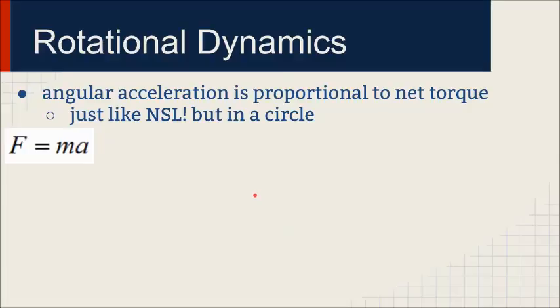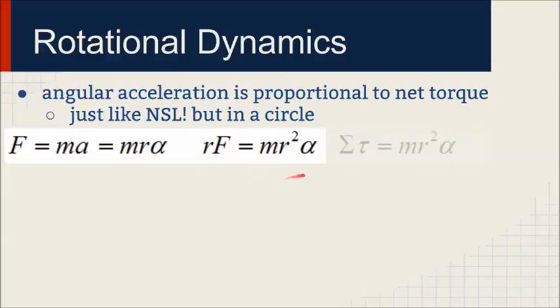So if we take Newton's second law, F equals MA, and we change the acceleration to alpha R that we learned in kinematics, we're replacing the A with R alpha. Then we multiply both sides of the equation with R. Then torque is produced. So the net torque is equal to the mass times the radius squared times the angular acceleration. Which means that torque is directly proportional to angular acceleration.